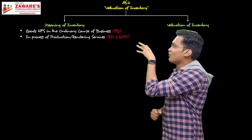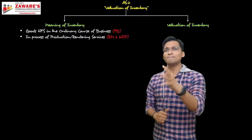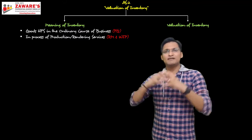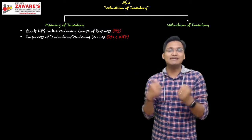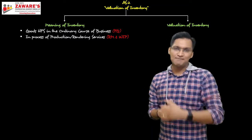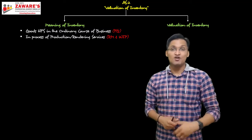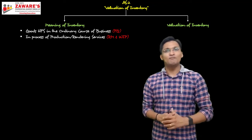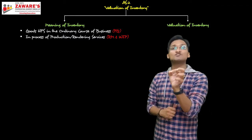Number two: goods in the process of production or rendering services. Inventory isn't only for traders. For a manufacturer who gathers different raw materials, processes them, and creates new goods to sell — the raw materials stored are used in the process of production. Taking the example of Domino's: pizza is their finished good, and all the different raw materials used to make pizza constitute their inventory held in the process of production.